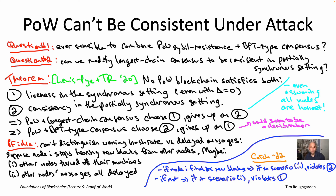That completes the proof. The one sentence to remember: why fundamentally do proof-of-work blockchains require this stark choice between a very basic liveness condition and consistency in the partially synchronous model? It's because in a proof-of-work setting, nodes cannot distinguish between the scenario where hash rate is waning versus the scenario where messages are being delayed by long periods of time.